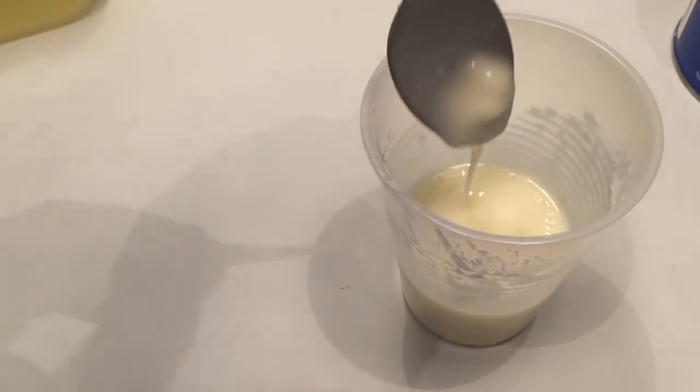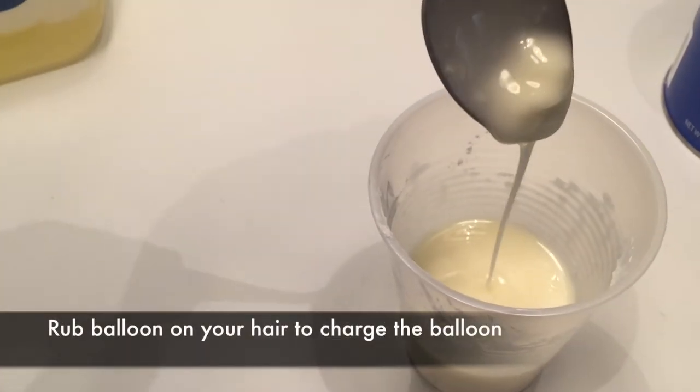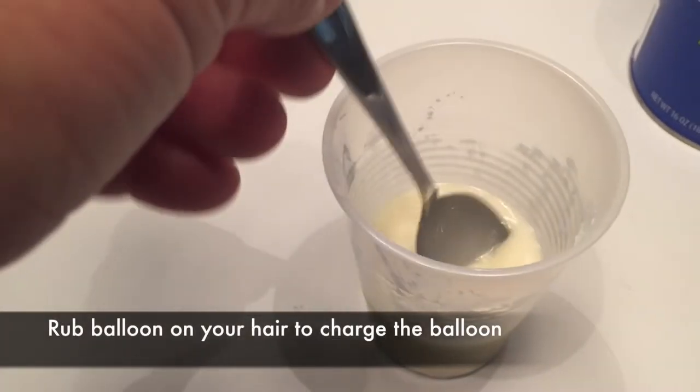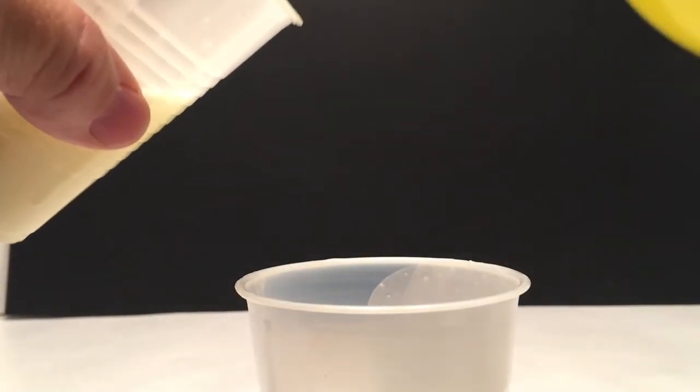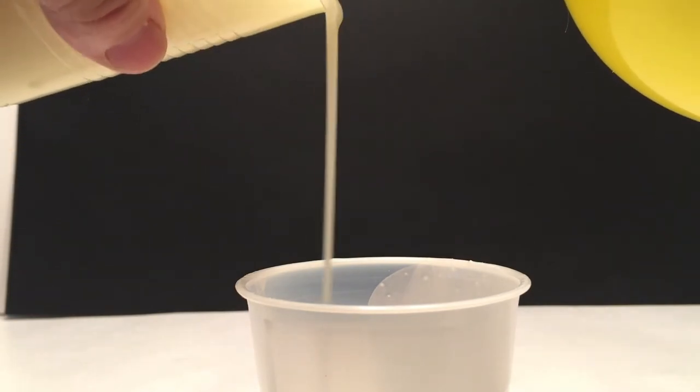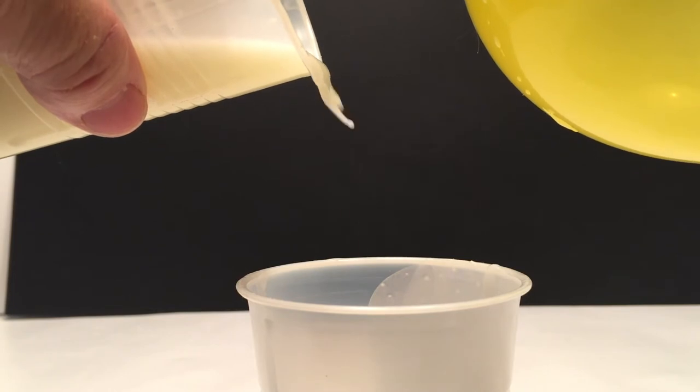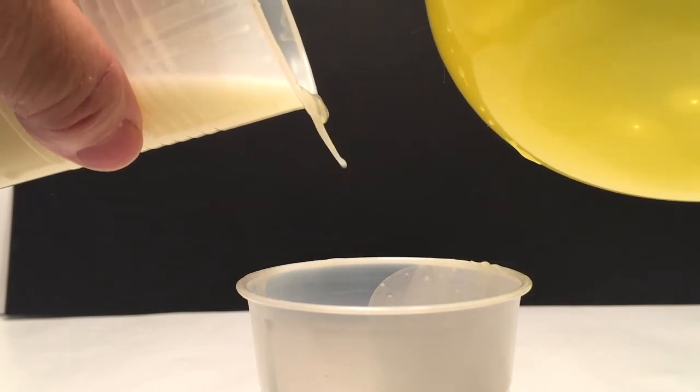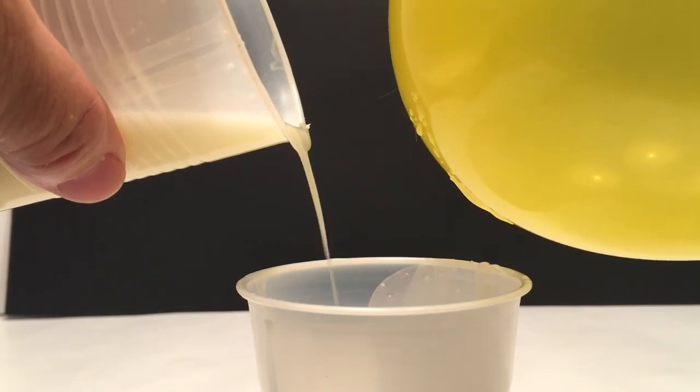Then blow up your balloon and electrically charge it by rubbing it on your hair or your brother's hair, your sister's hair. Get that balloon charged up. And then what you're going to do is take one cup and pour the fluid into the other cup and bring that charged balloon close to the fluid as it's coming down. And you can see that it's attracted to the balloon, which is kind of crazy.